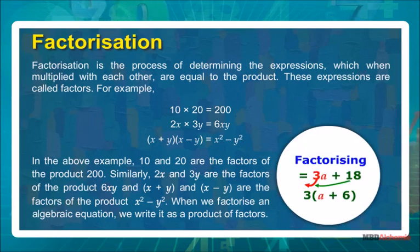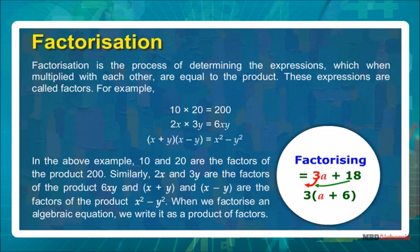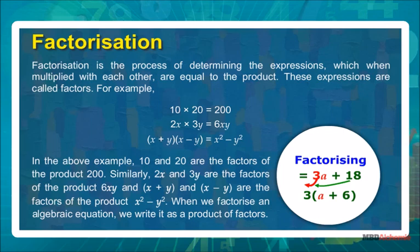Factorization is the process of determining the expressions which when multiplied with each other are equal to the product. These expressions are called factors. For example, 10 into 20 is equal to 200; 2x into 3y is equal to 6xy; and x plus y into x minus y is equal to x square minus y square.